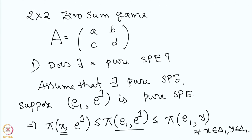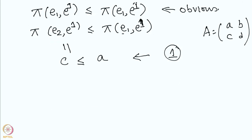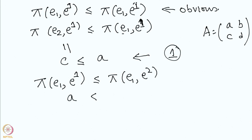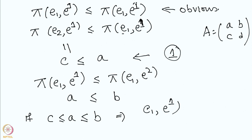Now let us look at the second condition. When y equals e2, we get pi(e1, e1) ≤ pi(e1, e2), which means A ≤ B. Therefore, if C ≤ A ≤ B, then (e1, e1) is a pure equilibrium.